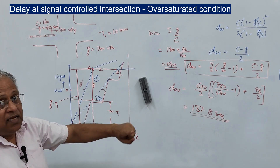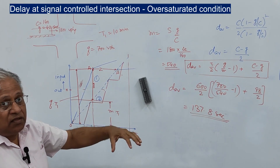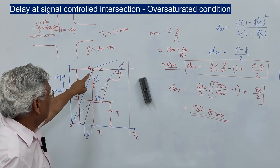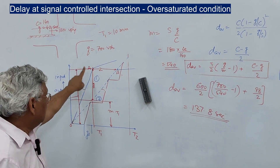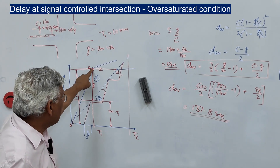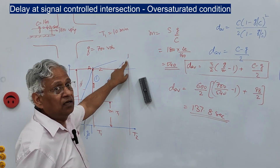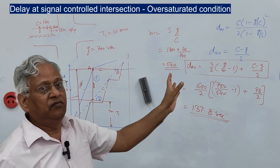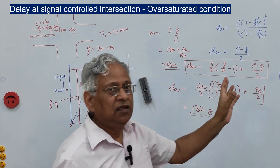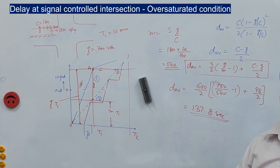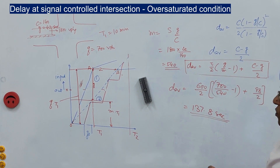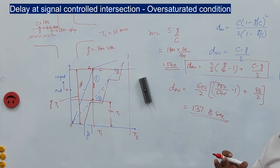It should be remembered that this over-saturation situation cannot persist for a long time — here it is 10 minutes. After T1, the flow must return toward normal; otherwise Q will become infinite. That is how we analyze delay at signal-controlled intersections. Thank you for watching; any questions can be written in the comment box.